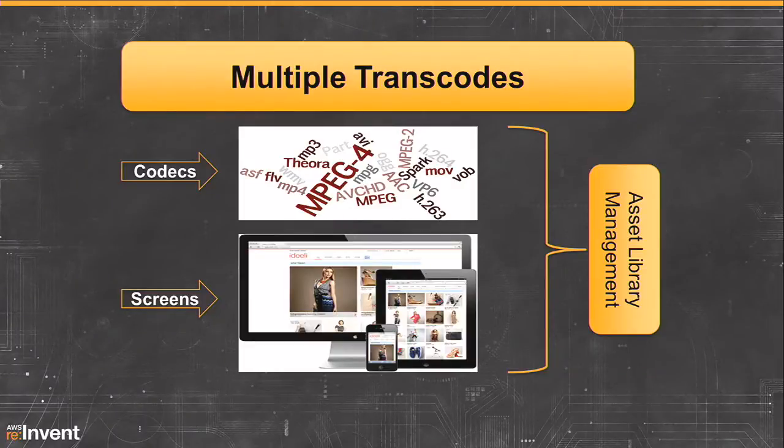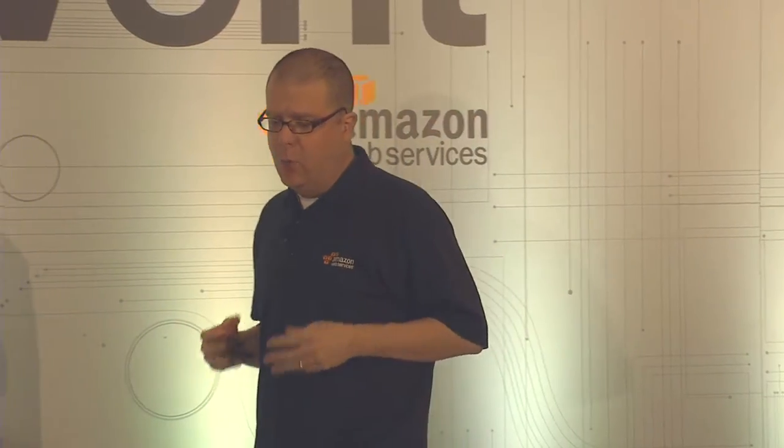How have people traditionally dealt with this? A lot of people have done multiple transcodes of the same content. They would encode into different codecs that work on various devices and encode to different form factors, different resolutions, to allow them to reach different screens. What this leads to is a tremendously high combinatorial problem where you have lots and lots of media assets to manage.